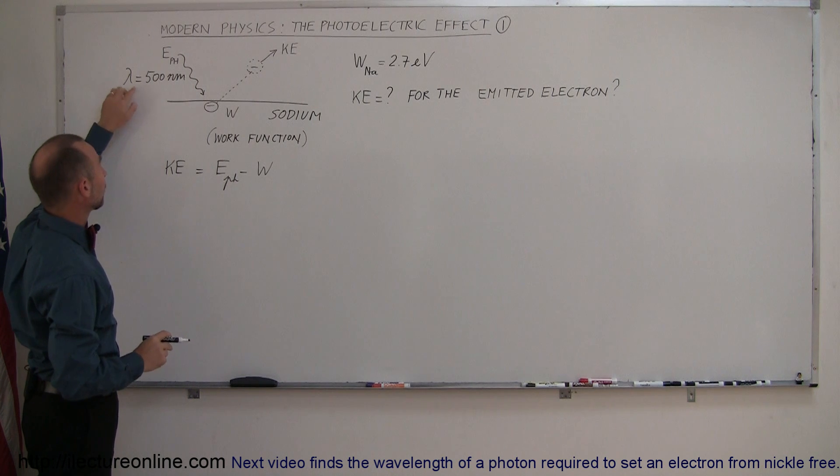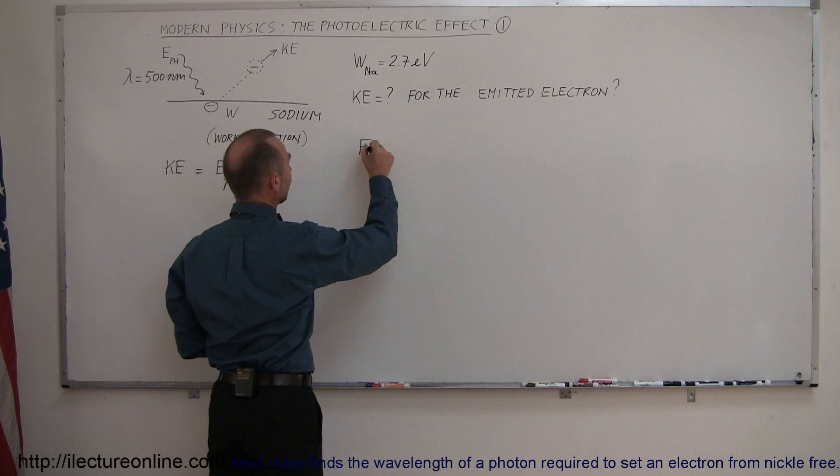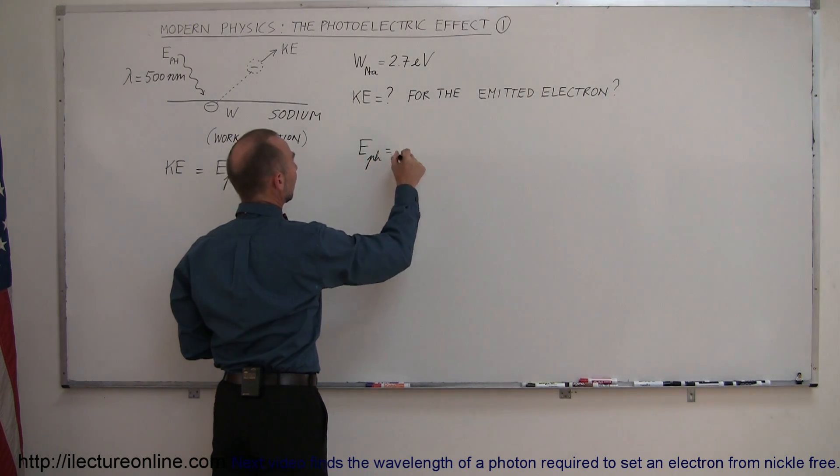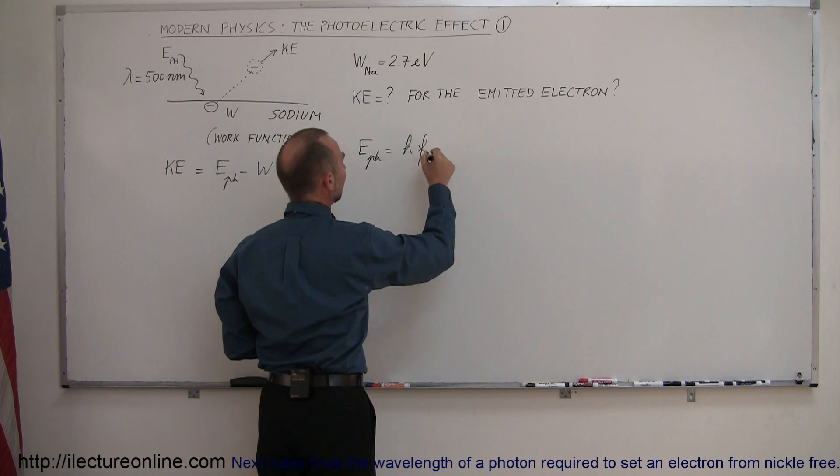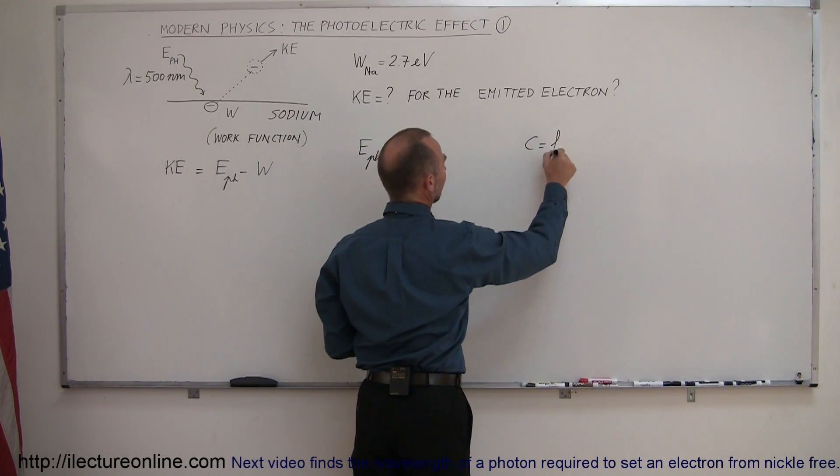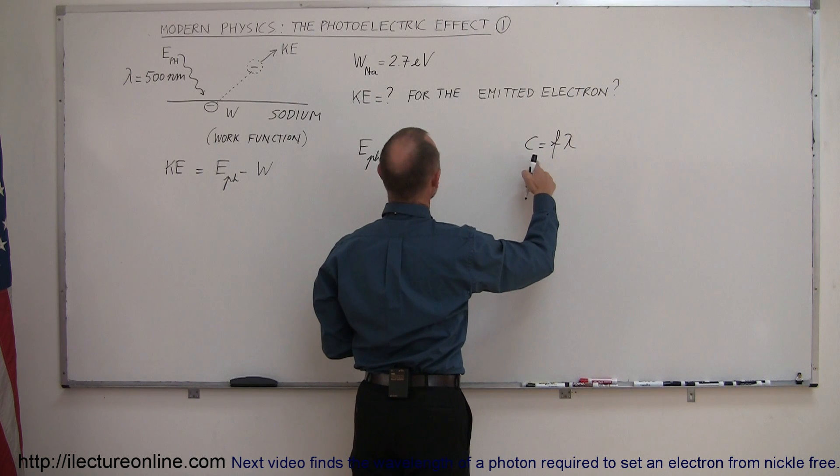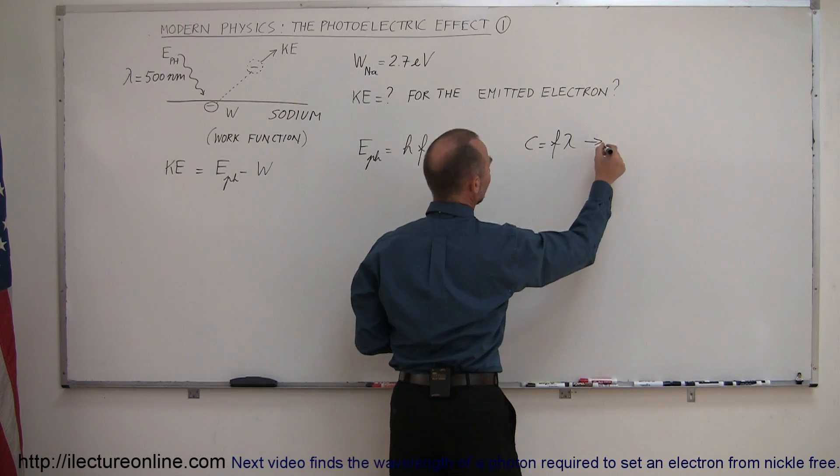So we need to figure out what the energy is of a photon that has a wavelength of 500 nanometers. We can say that the energy of the photon is equal to the Planck's constant h times the frequency of the oscillation. And since we know that the speed of light is equal to the frequency times the wavelength,